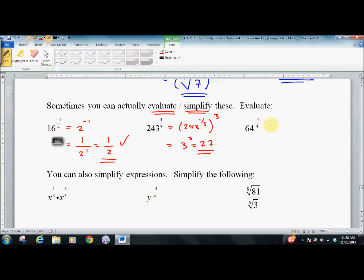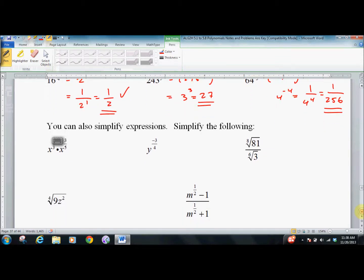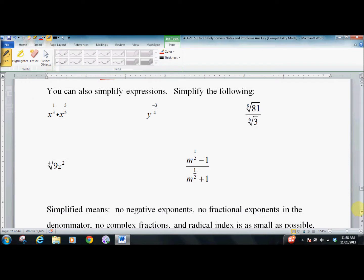And one more time over here, I'm going to go 64 to the one-third, which is 4, which is 1 over 4 to the fourth, which is 1 over 256. I'm making it look fairly easy. I've been practicing a lot lately, but also once you've done these over and over, it starts to become much faster.